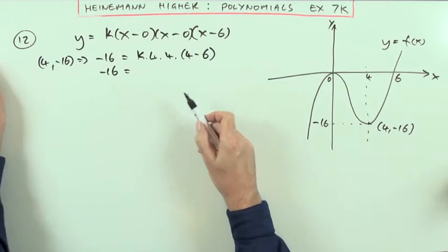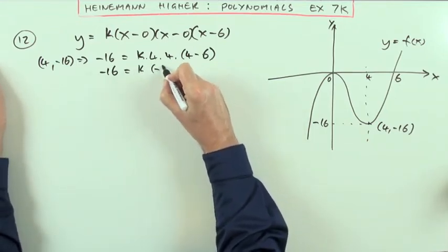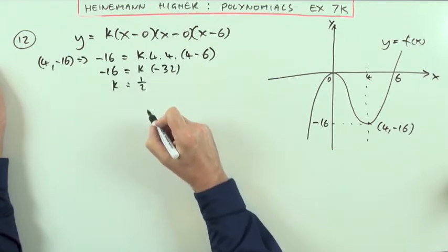So negative 16 is going to be, that's negative 2 times that. So that's k times negative 32, which means k is going to be, divided by that, k is going to be a half.